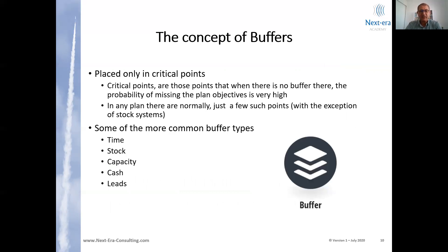In Theory of Constraints, we place buffers in our plans, but only at critical points — points where if there is no buffer, the probability of missing the plan is very high. There are practices for how to design and introduce buffers into plans by the separate type of plans, and we will go through them in other sessions. In any plan, there are normally very few points where buffers are required. The only difference would be in stock management, where every SKU in every location will need a buffer. Some of the more common types of buffers are buffers of time, of stock, buffers of capacity, cash, and buffers of leads at the entrance to the sales process — these are types of buffers that help protect against Murphy.